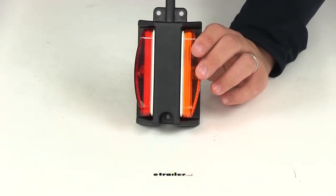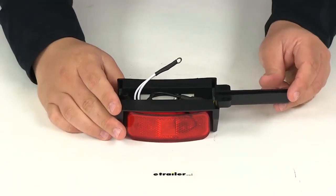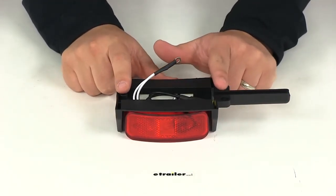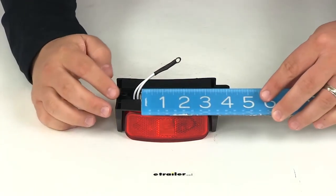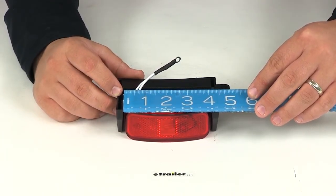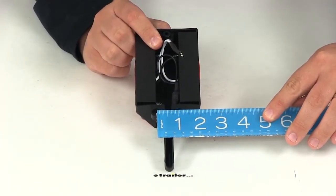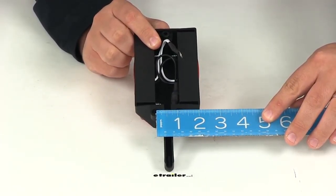You can see here that it has three mounting locations, two right here, one right here. If we take a measurement, the distance between the mounting slots, center on center, gives us a measurement of about four and three quarters of an inch. And then the distance between these two, center on center, is about one and one sixteenth of an inch.